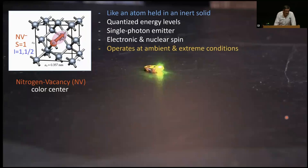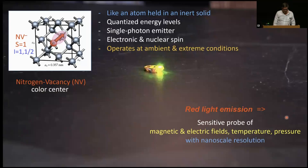So it's like an atom, as I said before, held in an inert solid. It has quantized energy levels like an atom would have. It's a single photon absorber and emitter like an atom would be. It has electronic and nuclear spin. It operates under ambient conditions. You can also make it cold. You can take it well above room temperature. You can put it into high pressure, high radiation environments. And the intensity of the red light is the measurable. It's a sensitive probe because the energy levels move around like they would in almost any atom with magnetic fields, electric fields, temperature, pressure. So with the right experimental protocol, you can measure all those things. And sometimes you can measure them simultaneously.